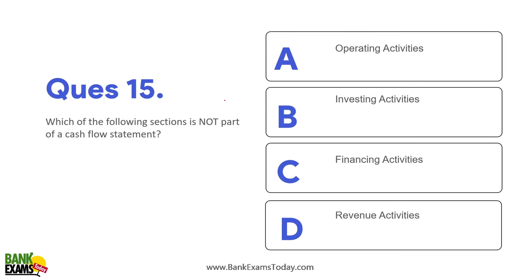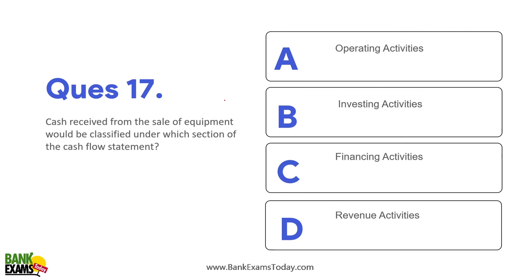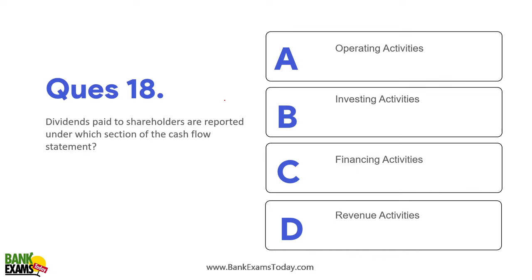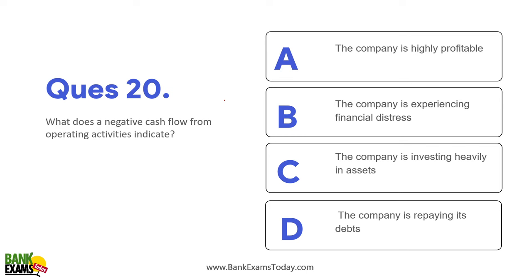Which of the following sections is not part of the cash flow statement? Revenue activities — that is not part of it. The three activities are investing, financing, and operating. What is the primary purpose of the cash flow statement? To provide information about cash inflows and outflows. Cash received from sale of equipment would be classified under investing activities. Dividend paid to shareholders is reported under financing activities. Which of the following would be included in cash flow from operating activities? Payment to suppliers. What does a negative cash flow from operating activities indicate? The company is experiencing financial distress — it is in losses.